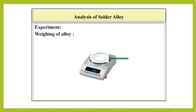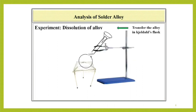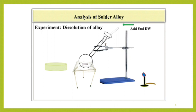Let us see the procedure for the experiment. The first part is the dissolution of the alloy. To dissolve the alloy, weigh about 0.3 gram solder alloy and call this weight as W gram. Then transfer the alloy in Kjeldahl flask. To this add about 5 ml distilled water and then add 1 ml concentrated HNO3.